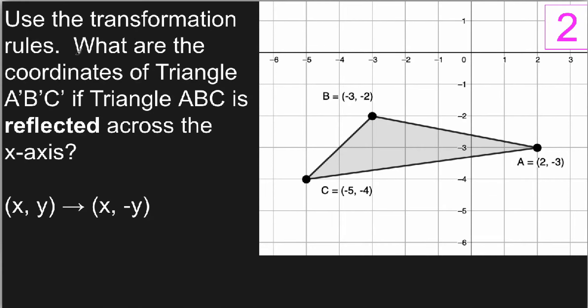In this problem, I'm going to use the transformation rules. The question is, what are the coordinates of triangle A prime, B prime, C prime, if triangle ABC is reflected across the x-axis?